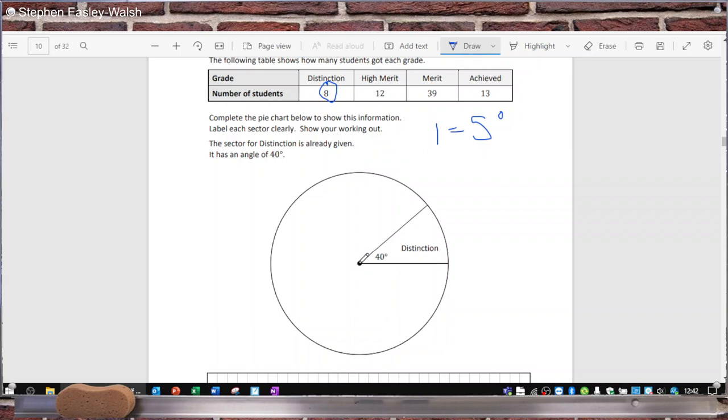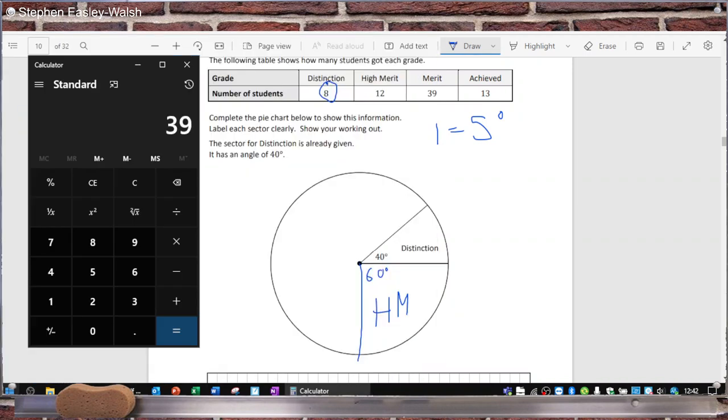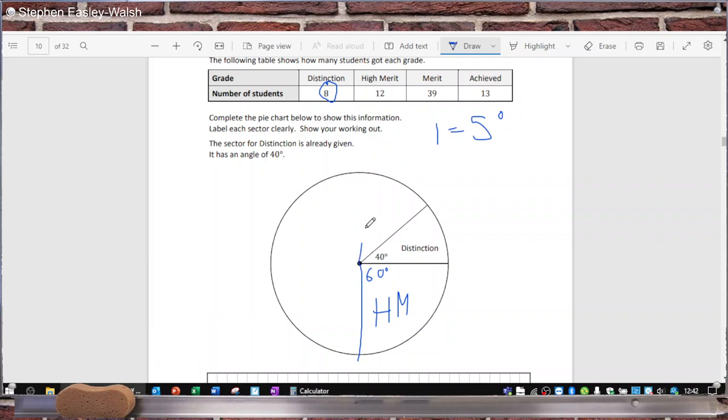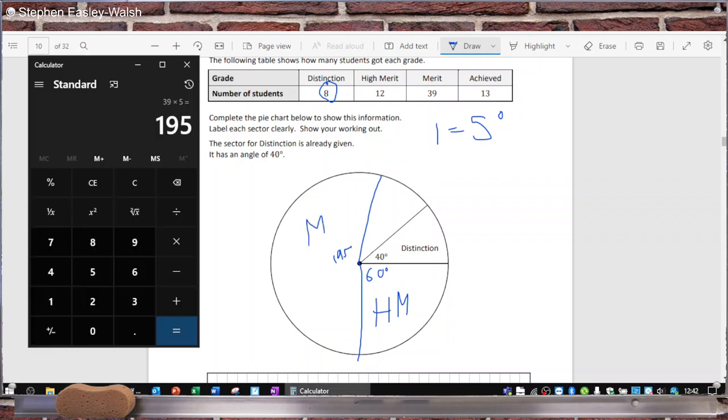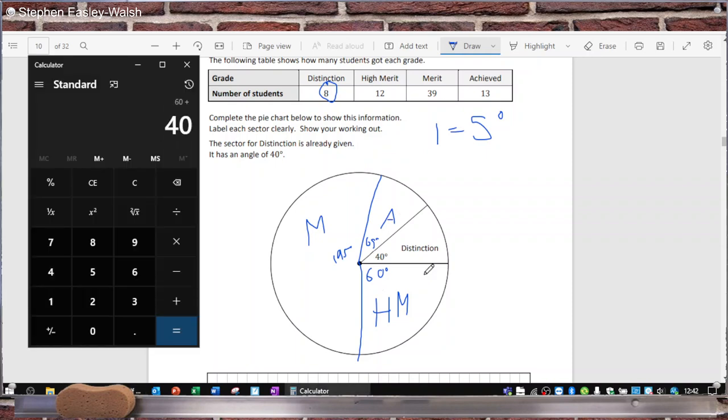So 12 times 5 is 60, so 60 degrees for a high merit. And then 39 times 5 is 195, so 195 degrees for merit. And then lastly, that's 65 for an achievement. Let's make sure they add up to 360. They do, so that's right now.